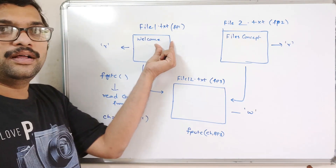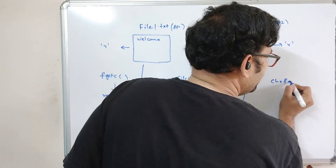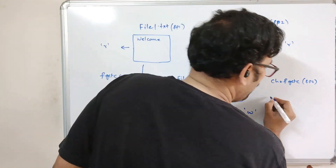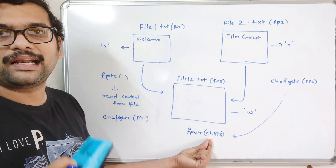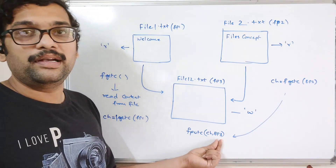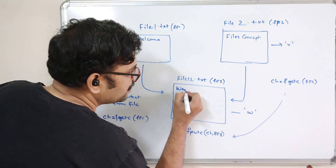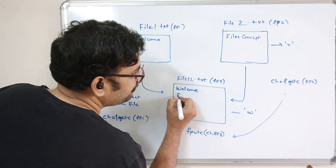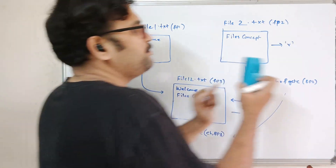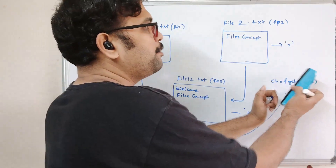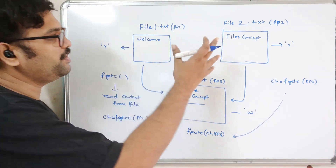We read the content from file1 and write it into file3. After that, we repeat the same process: read characters using fgetc from fp2, which points to file2, and write them using fputc to fp3. That means we pass each character we read and write it to file pointer 3. This is how we merge the two file contents into a new file, so finally we get both contents in a single file — 'welcome' from file1 and 'files concept' from file2.